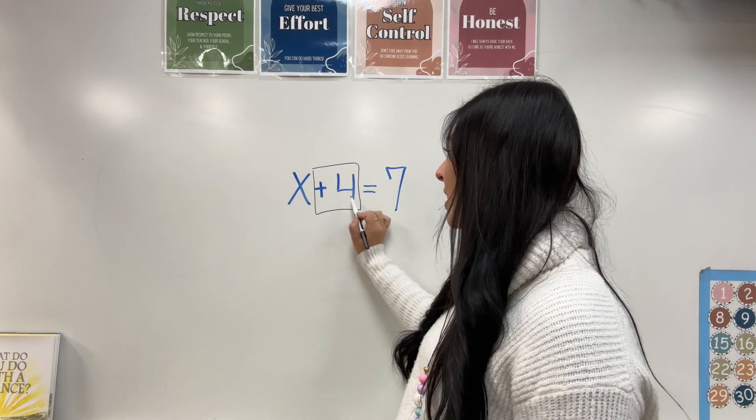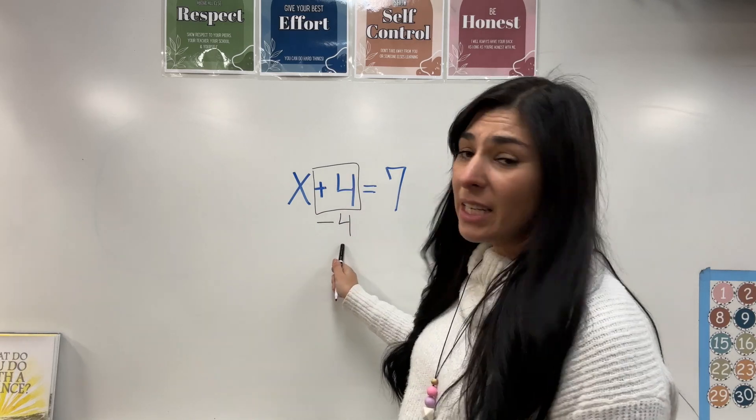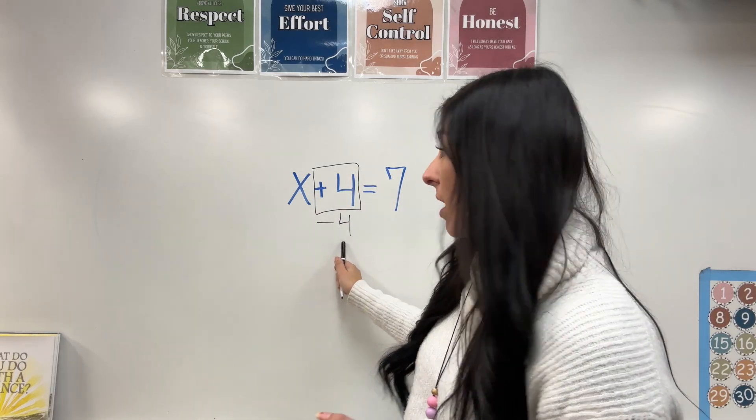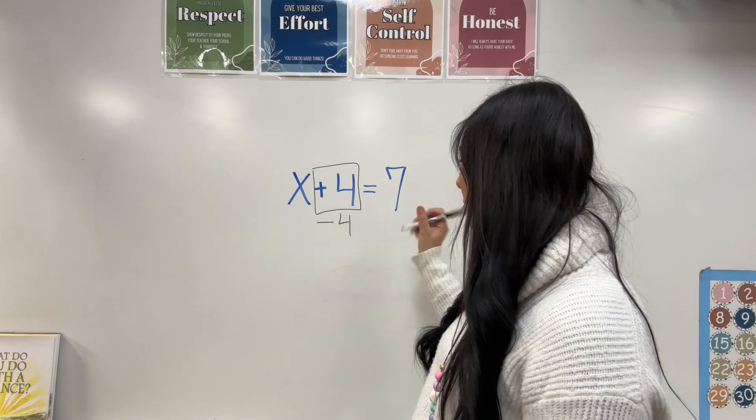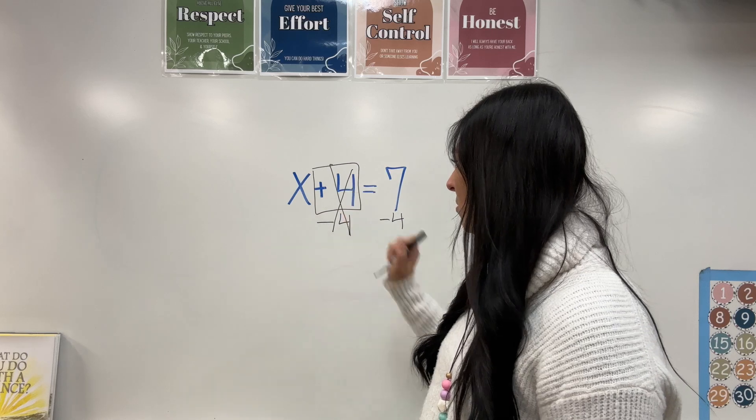So that means this is plus four, I'm going to do the inverse operation, which is minus four. Now I need to do this on both sides of the equal sign. So because we did it on this side, we also need to do it on the other side of the equal sign.